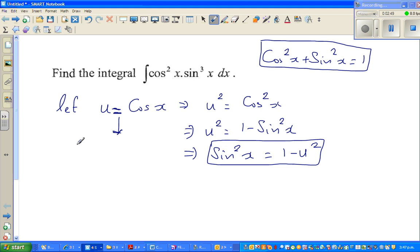If you differentiate both sides, d by dx of u equals d by dx of cos x. So d by dx of u is nothing but du by dx. And differentiation of cos x, you can refer in the formula sheets, is minus sine x.